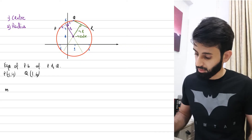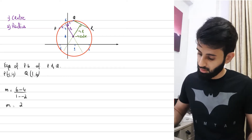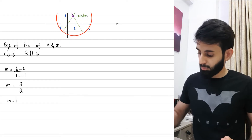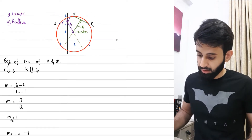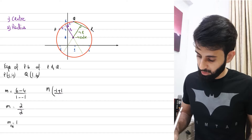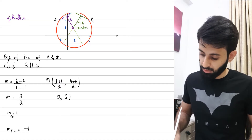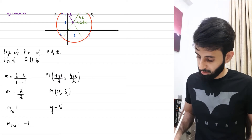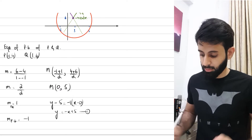Coordinates of P are (-1, 4) and Q are (1, 6). The gradient of PQ is (6-4)/(1-(-1)) = 2/2 = 1. So the gradient of the perpendicular bisector is -1. The midpoint of PQ is (0, 5), giving the equation y - 5 = -1(x - 0), so y = -x + 5.